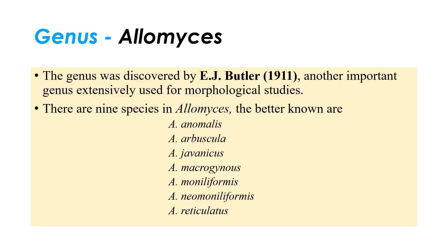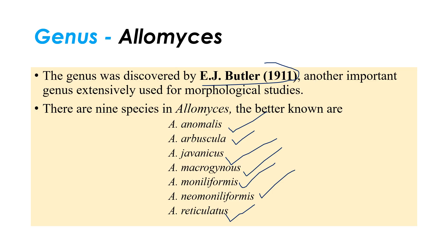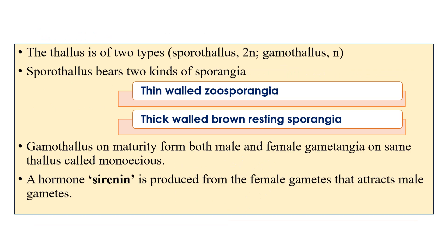The next genus is Allomyces, which is very important. This genus was created by E.J. Butler, who is renowned as the father of plant pathology in India. There are nine different species; some important ones include Allomyces anomalus, Allomyces arbuscula, Allomyces javanicus, Allomyces macrogynus, Allomyces moniliformis or neomoniliformis, and Allomyces reticulatus.